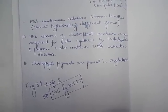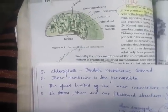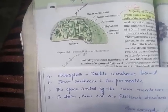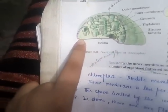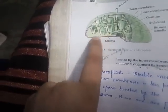You can refer to figure 8.8, chapter 8, page 136 in NCERT to see the diagram. The space limited by the inner membrane is called stroma. This inner membrane encloses the stroma inside the chloroplast.